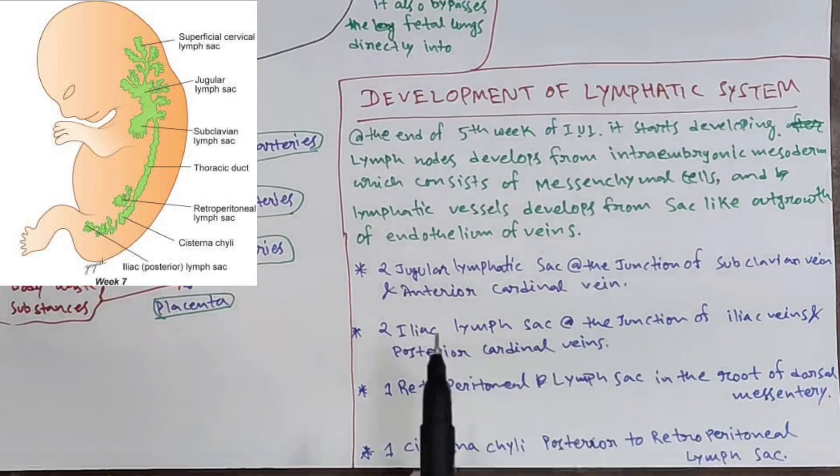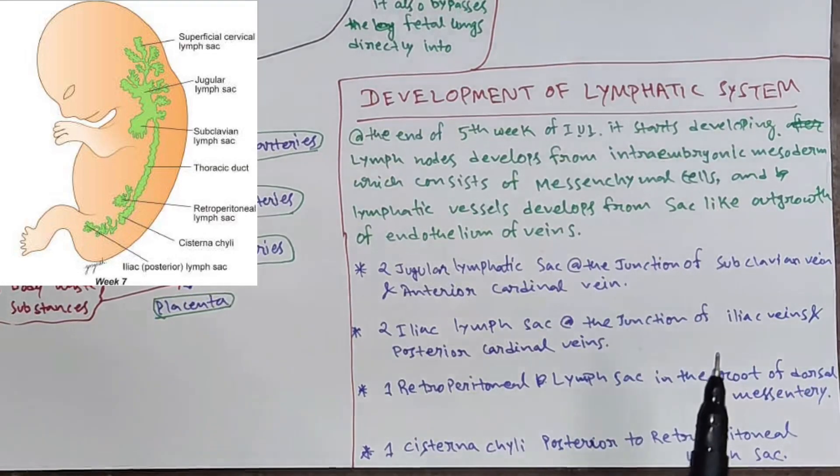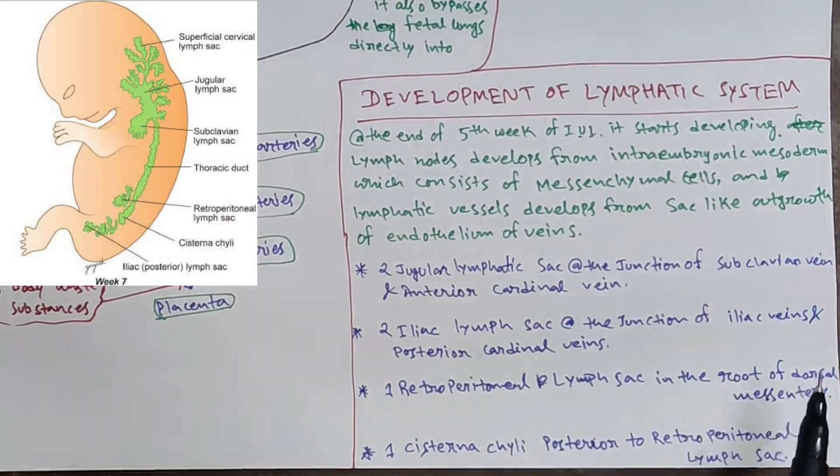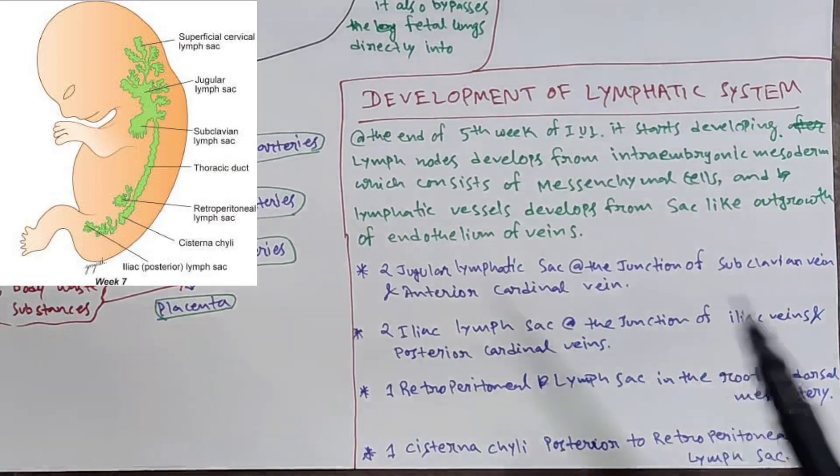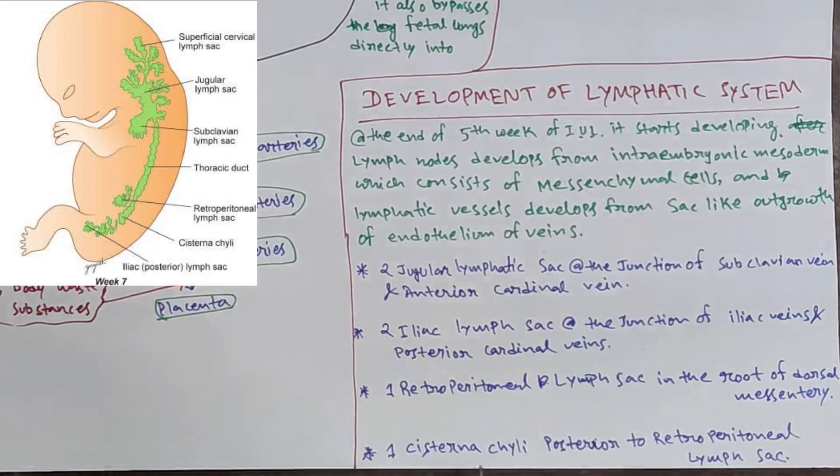One retroperitoneal lymph sac develops in the root of the dorsal mesentery, and one cisterna chyli develops posterior to the retroperitoneal sac.